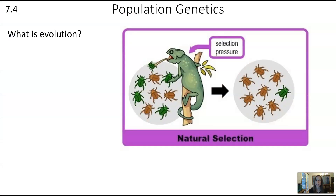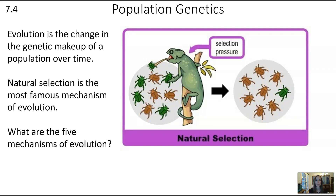As a start, let's remind ourselves what is evolution. Evolution is the change in the genetic makeup of a population over time, or change in the gene pool. Natural selection is the most famous mechanism of evolution, but there are other causes as well. There are five total mechanisms, natural selection being one of them. What are all five of those mechanisms?